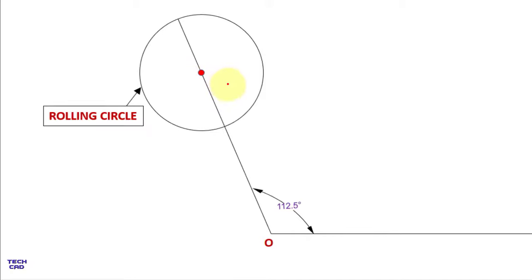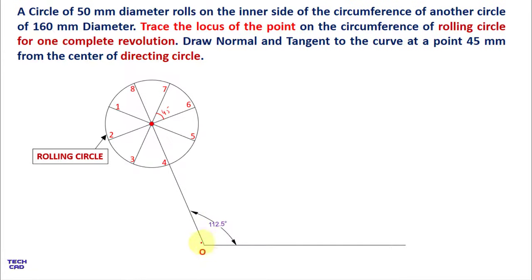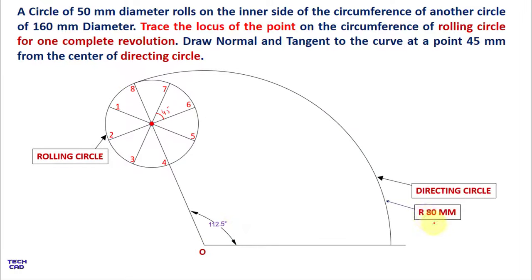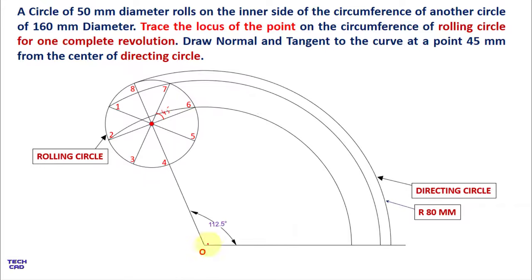With a radius of 25 mm draw the rolling circle. Divide this circle into 8 equal parts by taking an angle of 45 degrees between all the lines. Then put your compass at point O and from point 8 mark an arc for the directing circle with radius 80 mm. Again from O, mark arcs from points 1 and 7, then 2 and 6, then from the center of the rolling circle, then from points 3, 5, and 4.